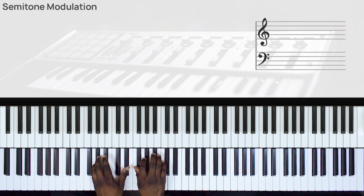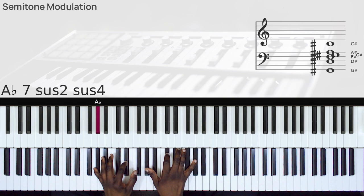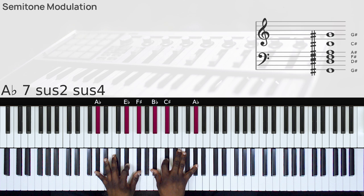So you could play this, you could also do this. So here we have Ab, Eb, F-sharp, Ab, B-flat, C-sharp. You could also do that.